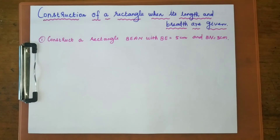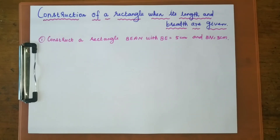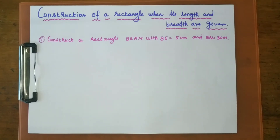Hello students, welcome to Kanditam with Kanchana channel. Today we are going to discuss how to construct a rectangle when length and breadth are given. In a rectangle, opposite sides are equal and all the angles are equal to 90 degrees. We are going to use that property to construct a rectangle.